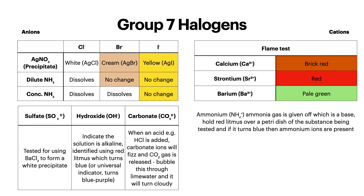Here are the group 7 halogen tests. Anion tests: you have the same silver nitrate and ammonia testing as before. When testing for a sulfate, barium chloride is used to form a white precipitate if sulfate is present. For hydroxide, the solution is alkaline, so it can be identified using red litmus, which turns blue, or universal indicator, which will turn blue-purple. For carbonate, when an acid such as hydrochloric acid is added, the carbonate ions will fizz and CO₂ gas is released — you can bubble this gas through lime water and if the carbonate is present, it will turn cloudy.